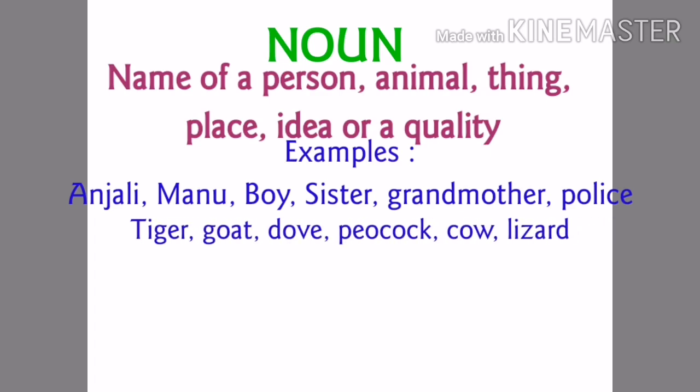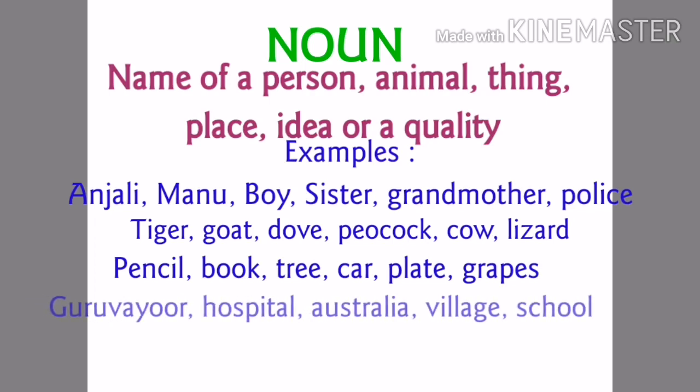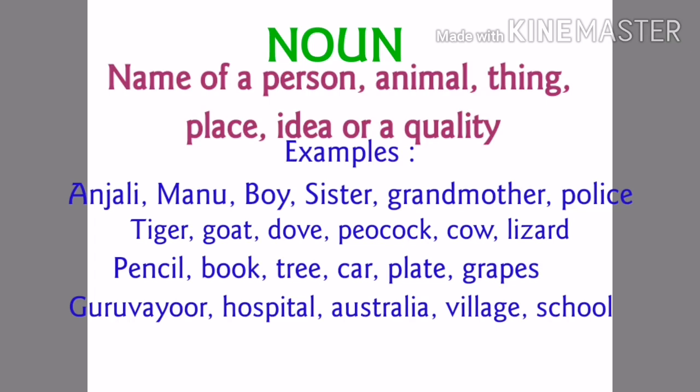Tiger, Dog, Dove, Peacock, Cow, Lizard, etc. are the names we give for animals. Pencil, Book, Tree, Car, Plate, Grape are the names we give for things. Guruvayur, Hospital, Australia, Village, School, etc. are the names we give for different places.